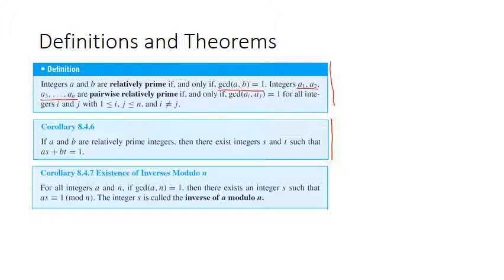Corollary 8.4.6: if A and B are relatively prime integers, then there exist integers S and T such that A times S plus B times T equals 1. This directly gives us corollary 8.4.7, the existence of inverses modulo n: for all integers A and N, if GCD of A and N equals 1, then there exists an integer S such that A times S is congruent to 1 modulo n. This integer S is called the inverse of A modulo n.